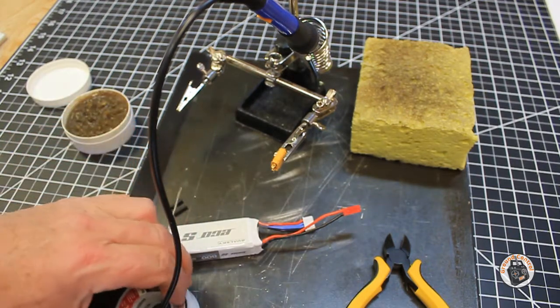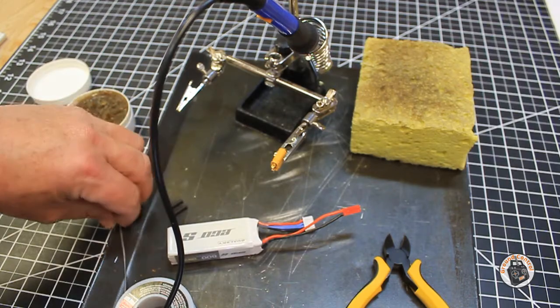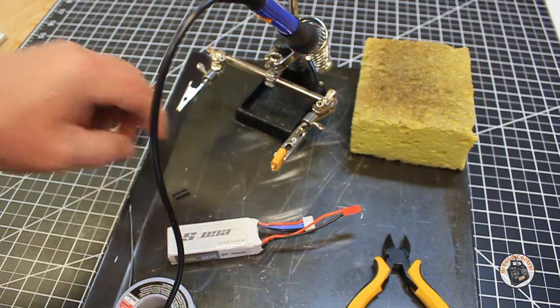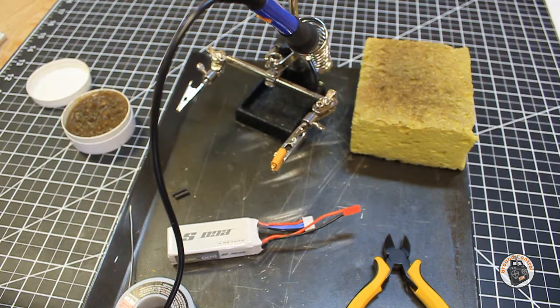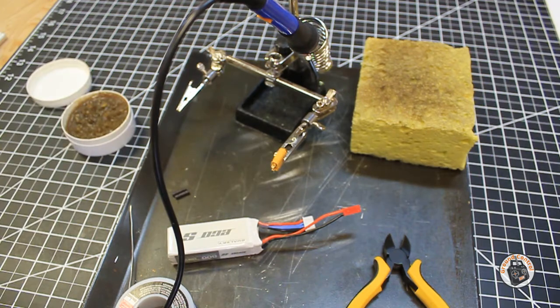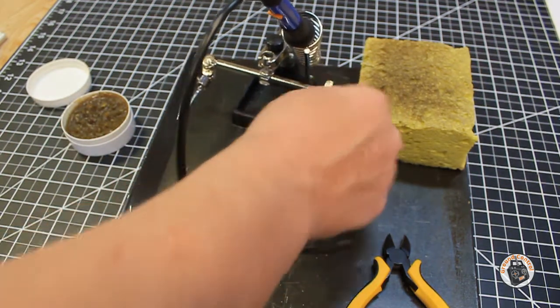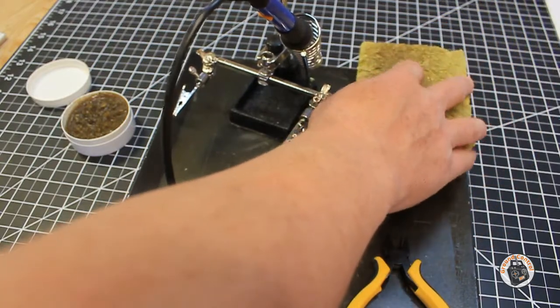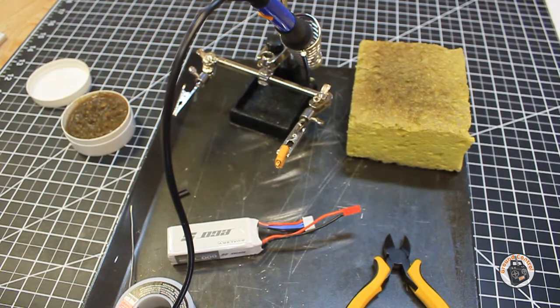I've got my 60-40 leaded solder here, 1.6 millimeters in diameter, and I've got a couple of pieces of heat shrink. I've got my soldering iron heating up, a little thing of flux, my solder station with my helping hands, and a moistened sponge to clean the tip of my soldering iron.